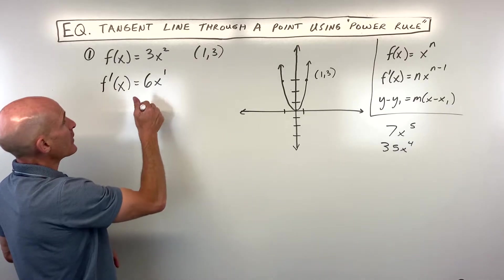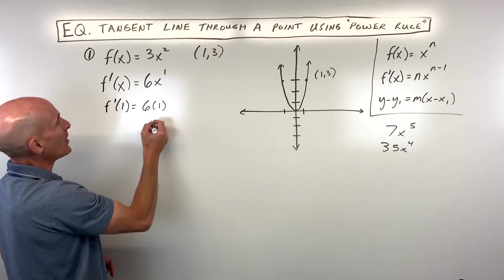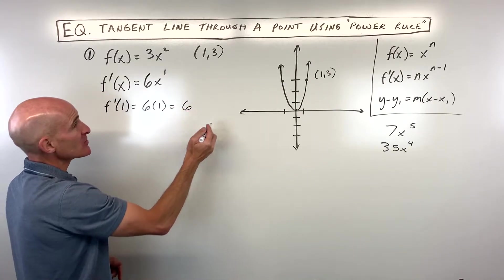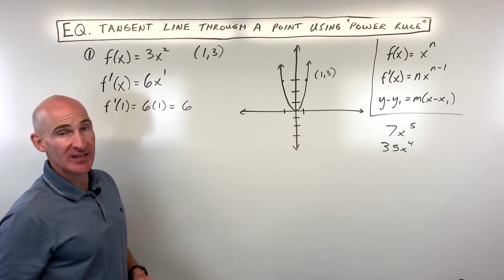If I put 1 in for x here, so this is f prime of 1, that's going to be 6 times 1, which equals 6. So that means at this point, it's going to have a slope of 6, the tangent line.